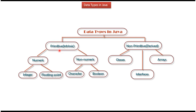Primitive data type is divided into two categories: numeric data type and non-numeric data type. Numeric data type is divided into two categories: integer and floating point data type. And non-numeric data type is divided into two categories — the first one is character data type and the second one is boolean data type. And non-primitive data type examples are classes, arrays and interfaces.